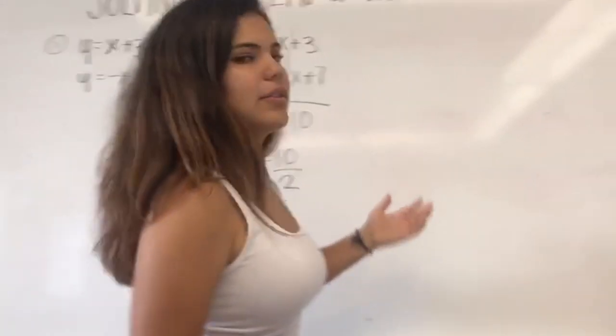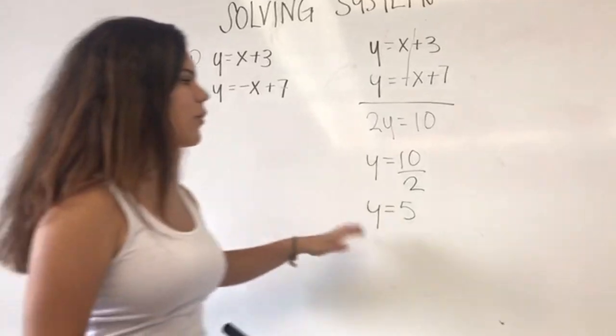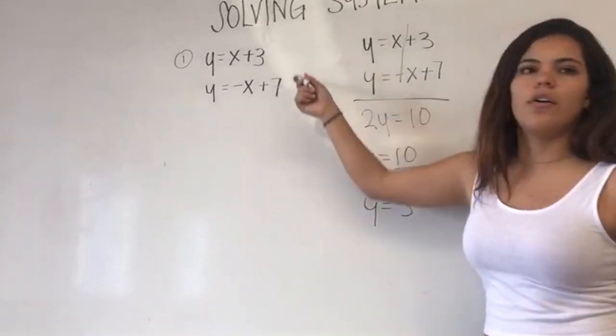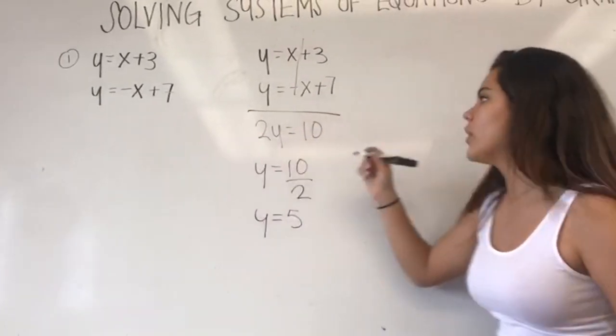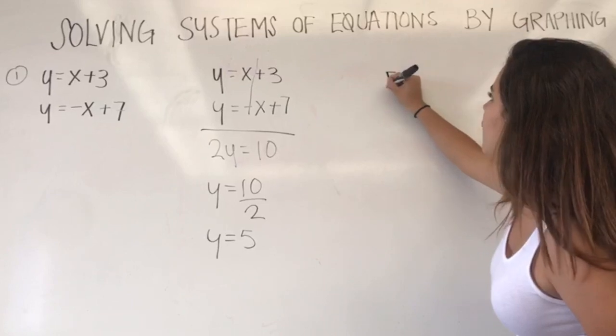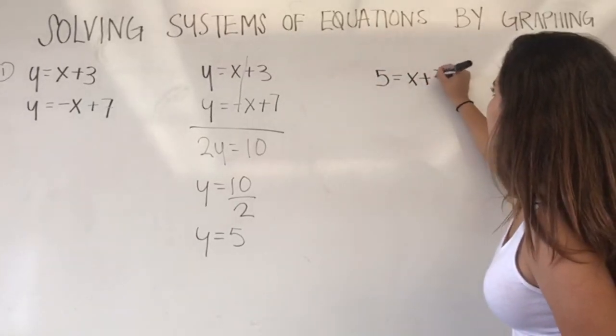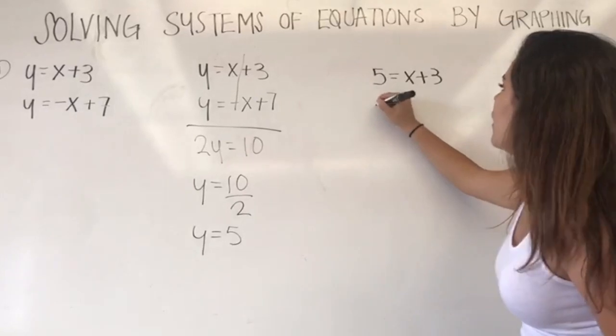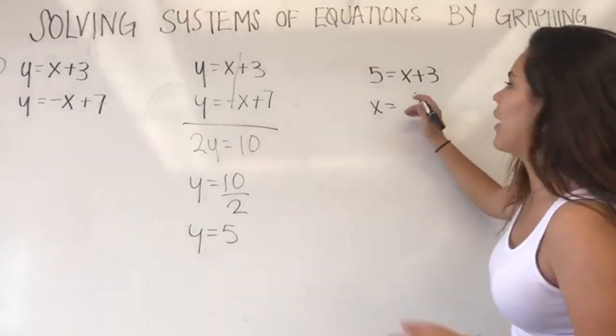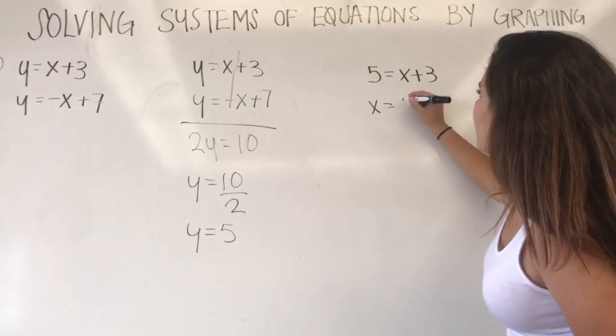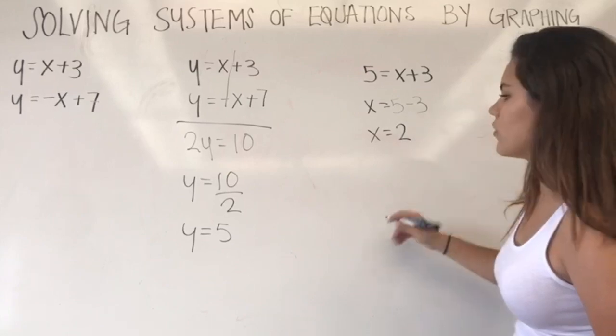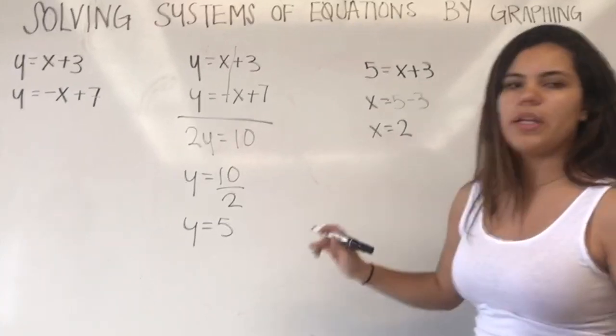So what we are going to do is substitute. You can use either of the two equations. It should give the same answer. So we have y equals 5, so you put 5 equals x plus 3. You put the x alone. So you have 5 minus 3. This gives you x equals 2. So this should be the meeting point.